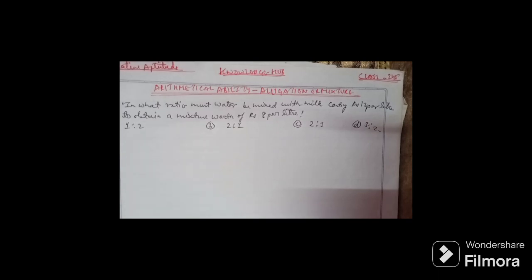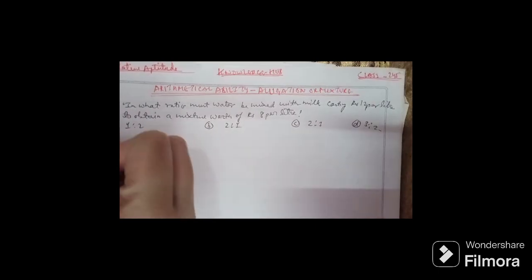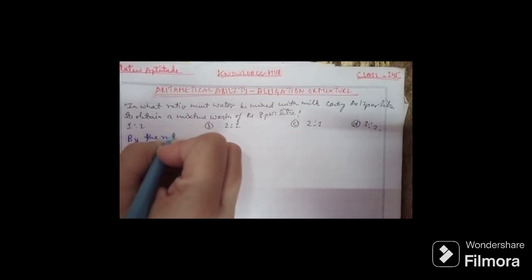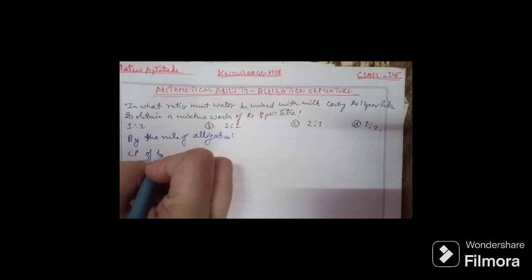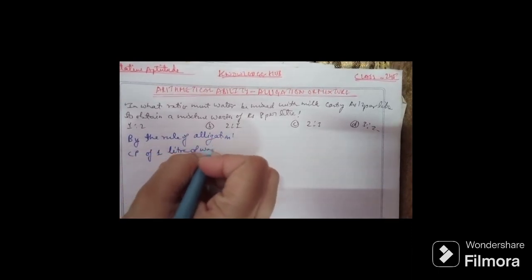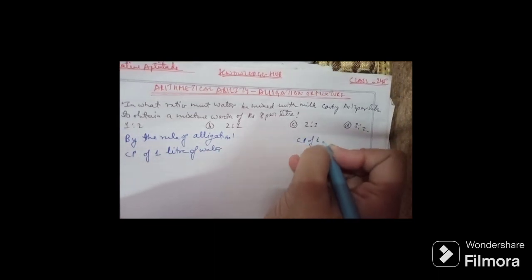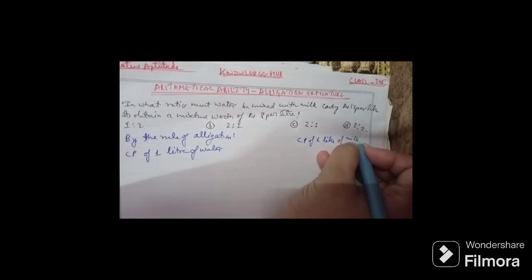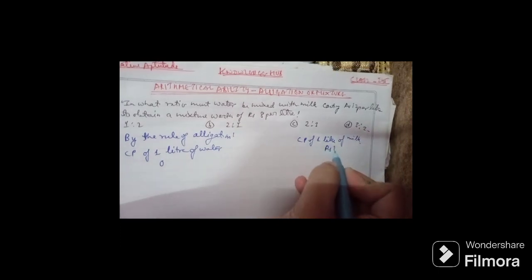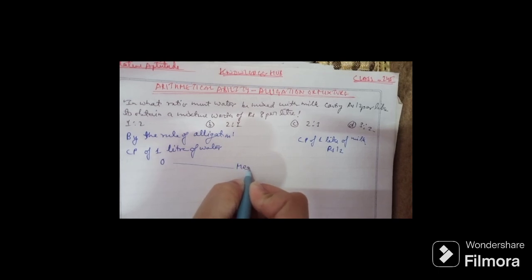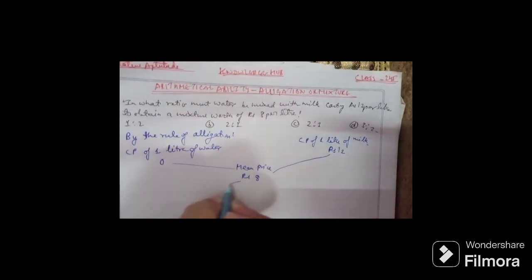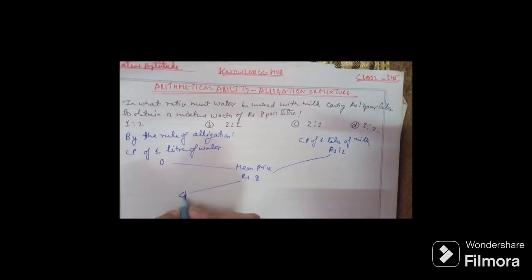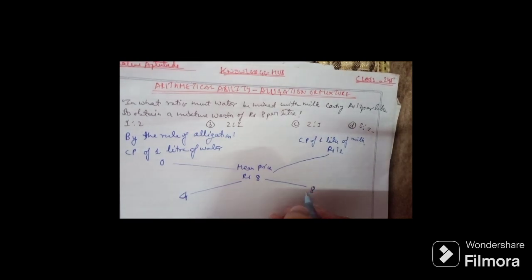So here we go. By the rule of alligation: cost price of 1 liter of water is 0 rupees, cost price of 1 liter of milk is 12 rupees. The mean price is 8 rupees.